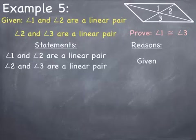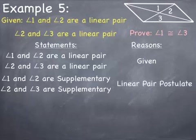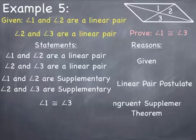Angles 1 and 3 are each a linear pair with the same angle — angle 2. Because angles 1 and 2 are a linear pair, I can say they are supplementary. And because angles 2 and 3 are a linear pair, I can say they are supplementary as well — based on the linear pair postulate. If two angles are supplementary to the same angle or congruent angles, those angles are congruent. Angles 1 and 3 are both supplementary to angle 2, so by the congruent supplements theorem, angle 1 is congruent to angle 3.